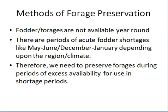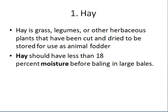Now we go towards forage preservation methods. In certain seasons we do not have fodder and forage available throughout the whole year. There are periods of shortage, for example in May-June and in December-January. Therefore we need to preserve forage when it is available in excess. One method is hay — we take the green fodder, dry it, and make bales. Hay is grass, legumes, or herbaceous plants that have been cut and dried for use as animal fodder, and hay usually has less than 18% moisture before baling.